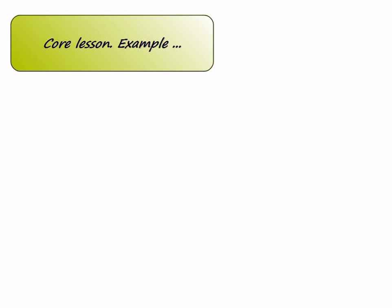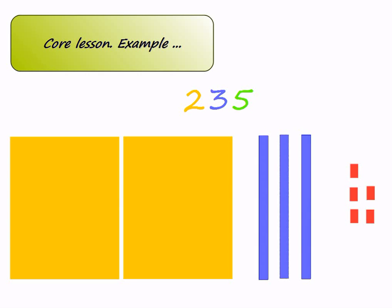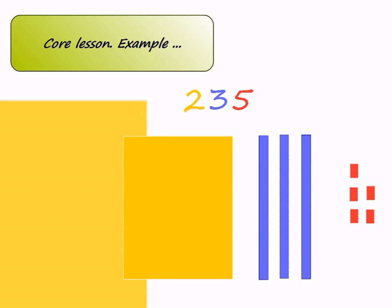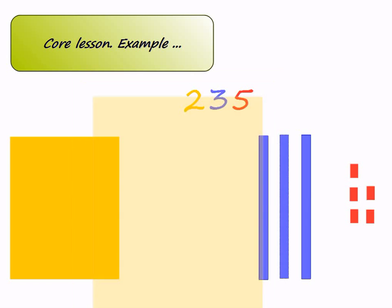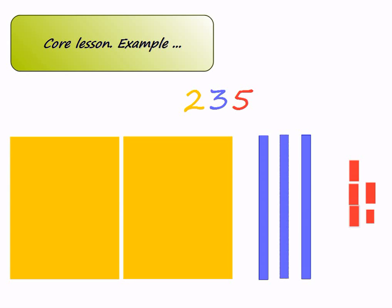Now we are going to build the number 235. We need 2 flats for 200, 3 longs for 3 tens, and 5 units for 5 ones. Let's count it together: 100, 200, 210, 220, 230, 231, 232, 233, 234, and finally 235.